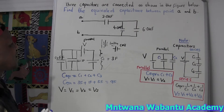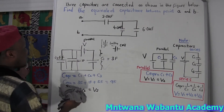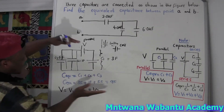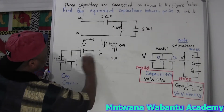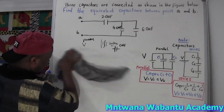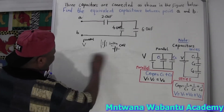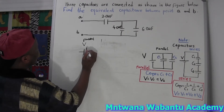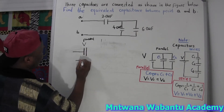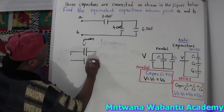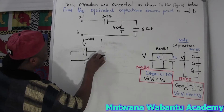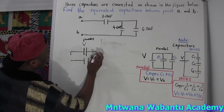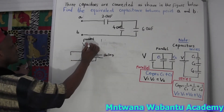Now let's go to series. For series, note that capacitors can be drawn in different orientations — the question won't always look the same. For example, the source of power and capacitors can be arranged differently. Let's say you have a battery here — that's more than one cell so it's a battery — with a capacitor of 4 farads and another of 0.5 farads.